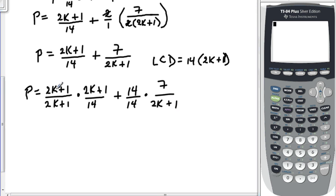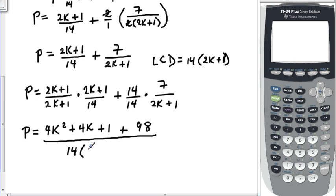On top here, we're going to have to use FOIL and our shortcut for FOIL. So, we take the first term here and we square it. So, we'll get 4K squared. And we're going to have a 2K and another 2K that will give us 4K. And our last term is going to be 1 times 1, which is just 1. Plus, 14 times 7 is 98. All of this is now over the same denominator, which is 14 times 2K plus 1.